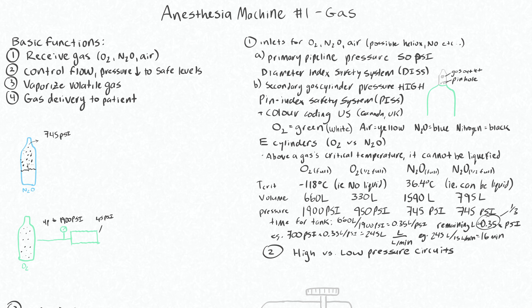The pressure limiter will bring pressure down to 45 psi, which is still much too high for the patient, but more reasonable than 1900 psi. Another reason for this is our wall oxygen, which is going to be delivered at 50 psi. These come together and we want our wall O2 to be the preferential source of oxygen going forward, so as long as wall O2 is higher than the tank pressure, gas flow will come from the wall O2.